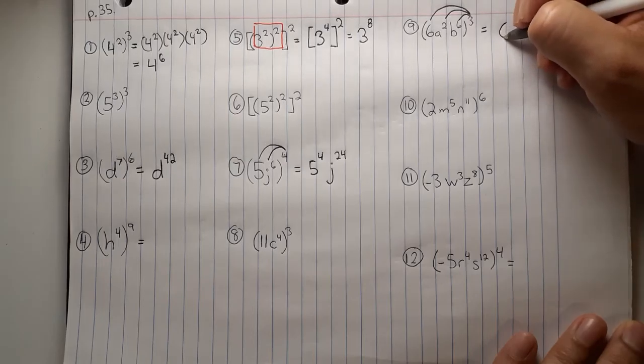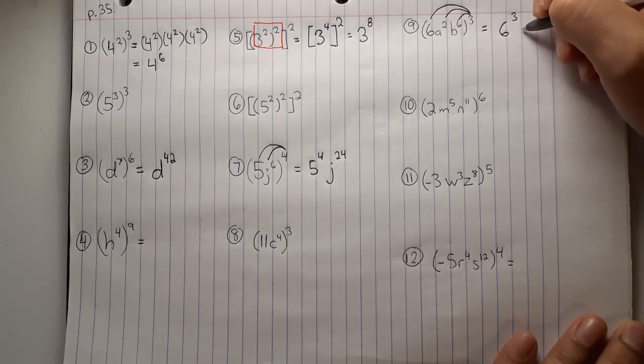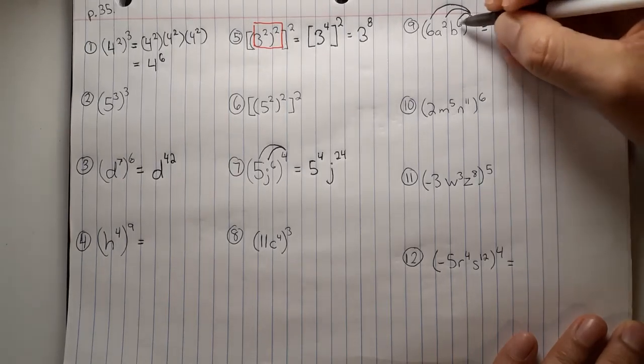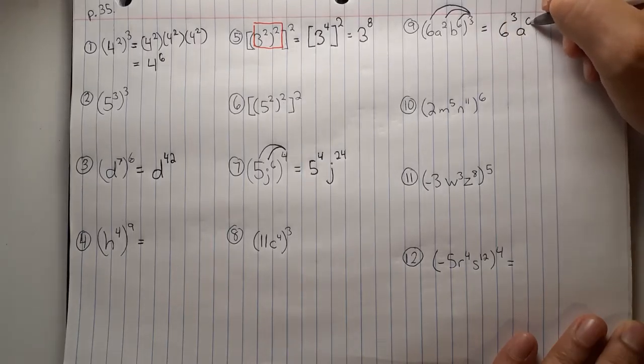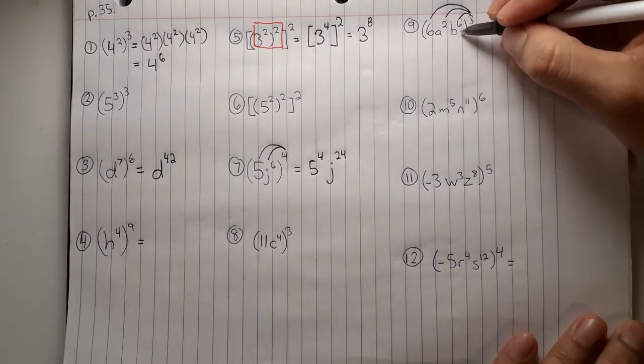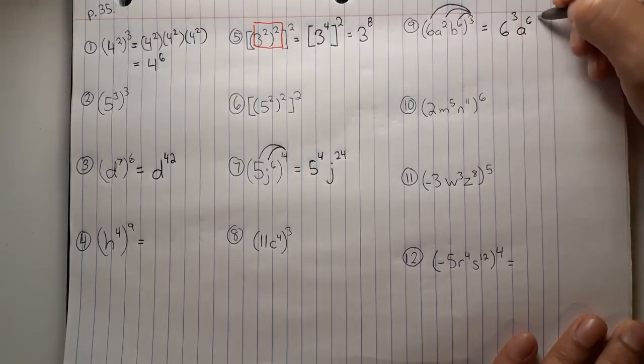So that will leave us with 6 to the power of 3, a to the power of 2 times 3, which is 6, and b to the power of 6 times 3, which is 18.